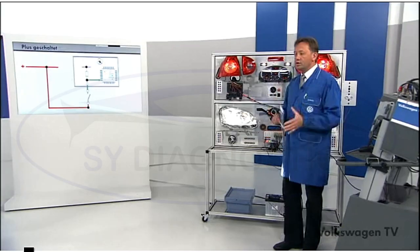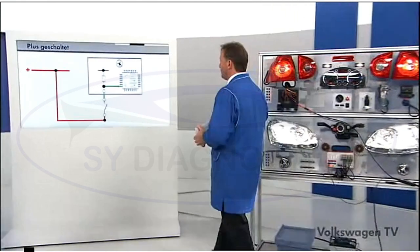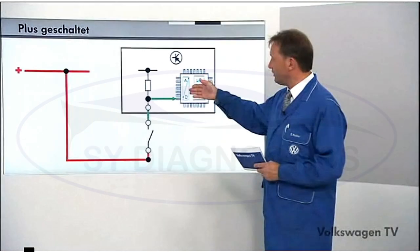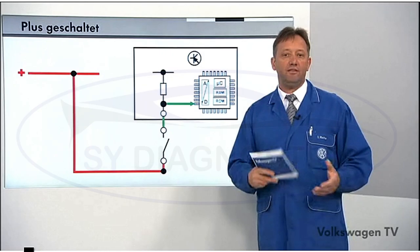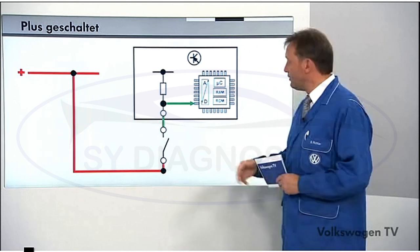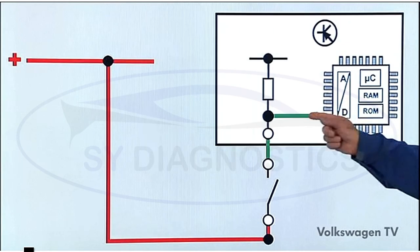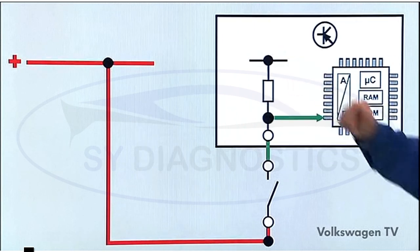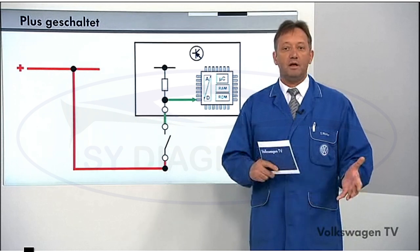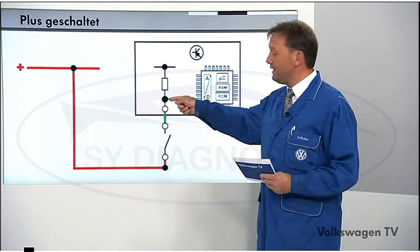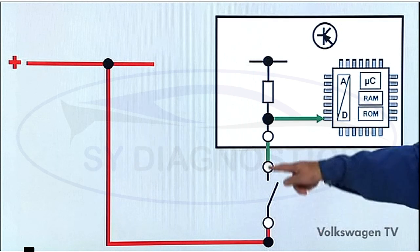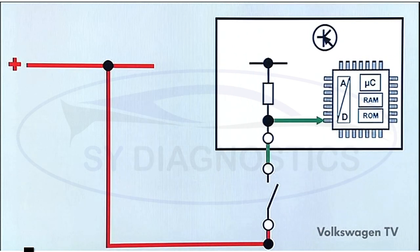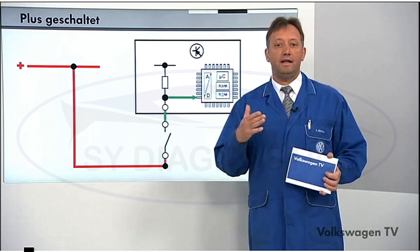Why would onboard voltage be okay in this case, while square wave voltage is not okay? To see this, we'll look at the structure of a control unit. Normally, in a control unit there is an analog-digital converter for the different signals, a microprocessor, a read-only memory or random access memory. If the switch is open, there is a voltage from the controller that flows off via a resistor to the internal earth of the control unit. The controller knows that if there is a voltage here and nothing happens, the switch is open. If the switch is closed, there will be onboard voltage, and the controller knows the switch is closed - a clear switch position.